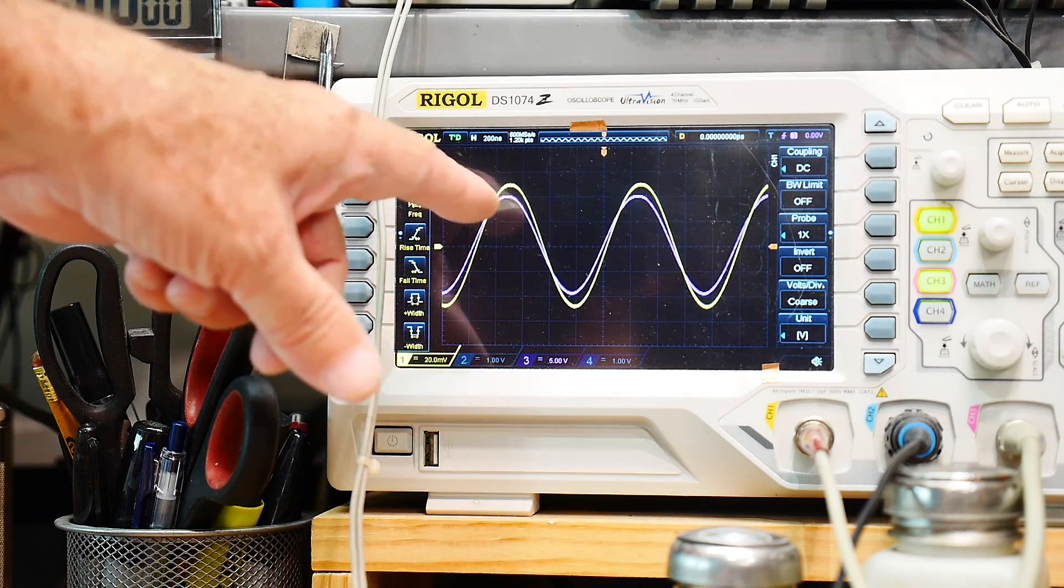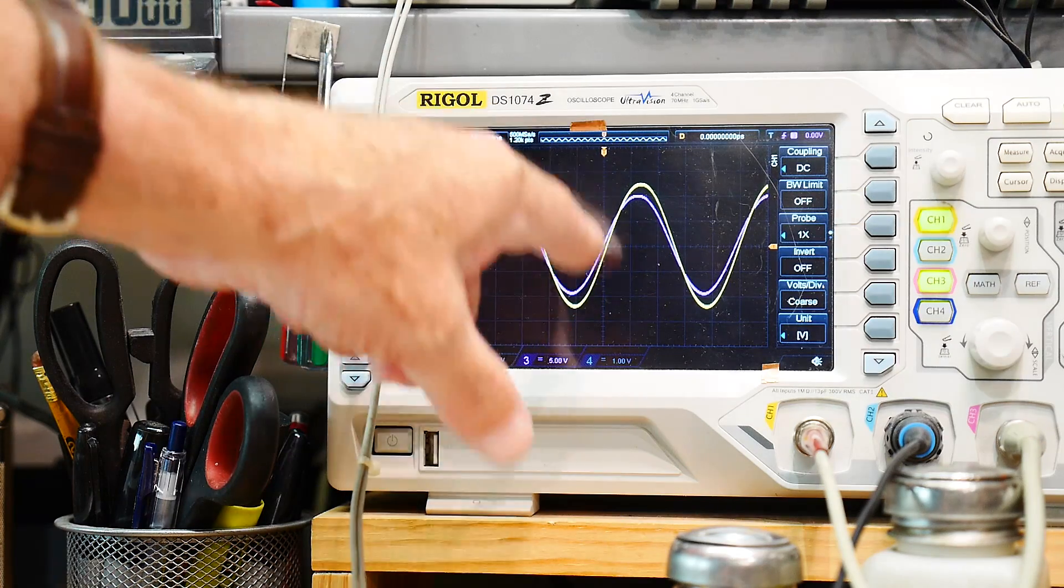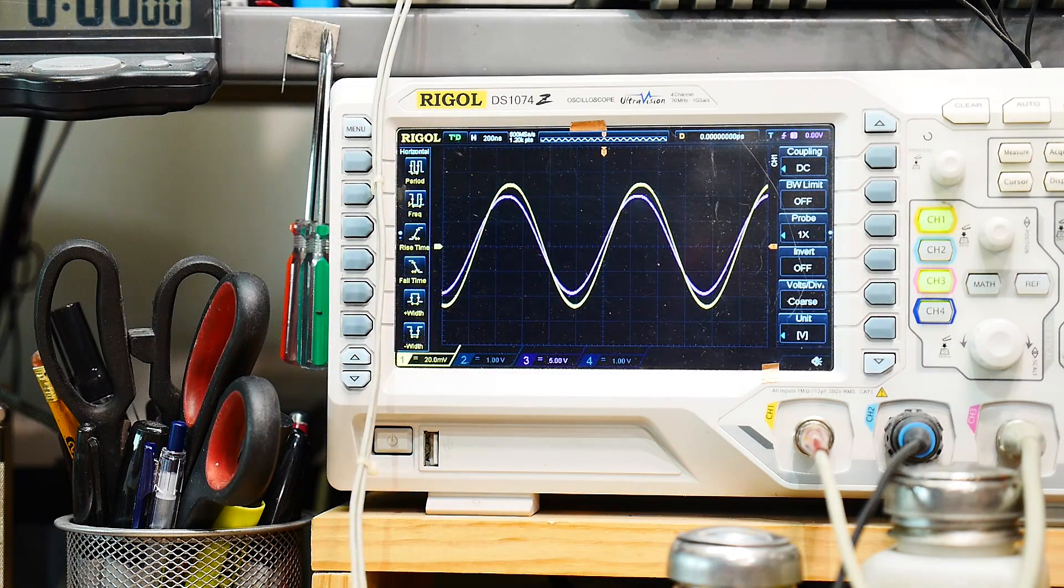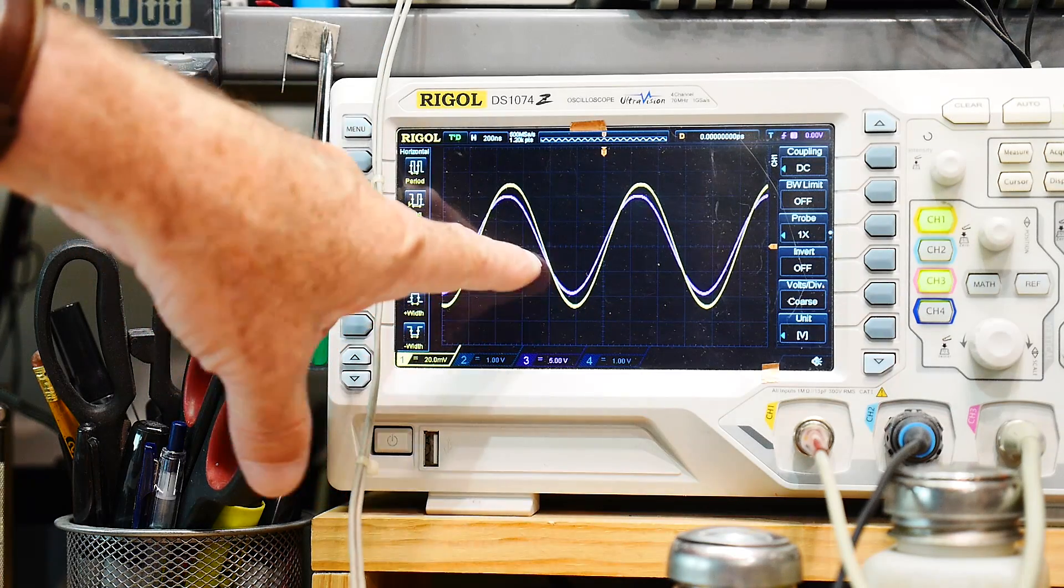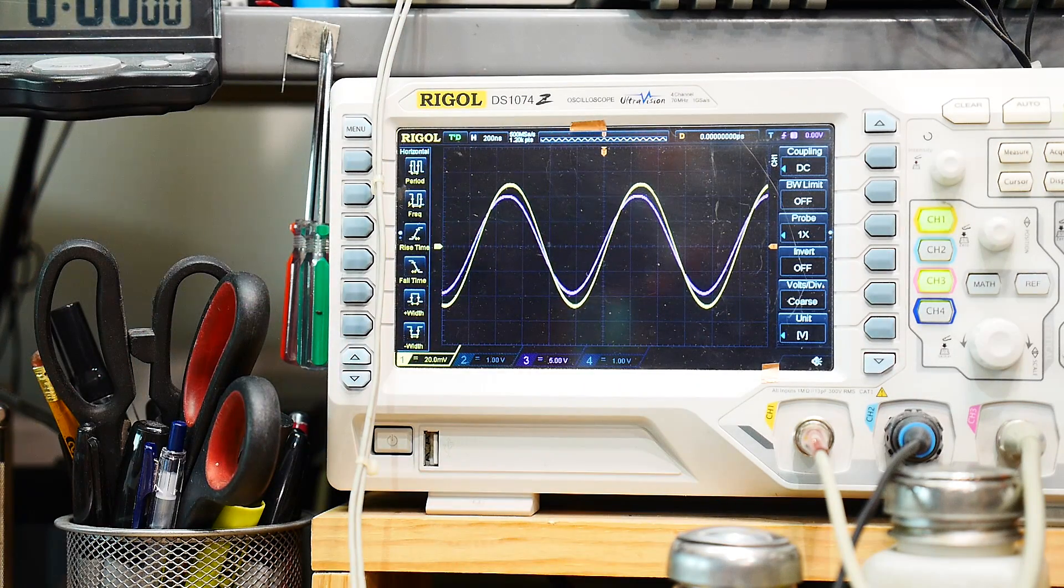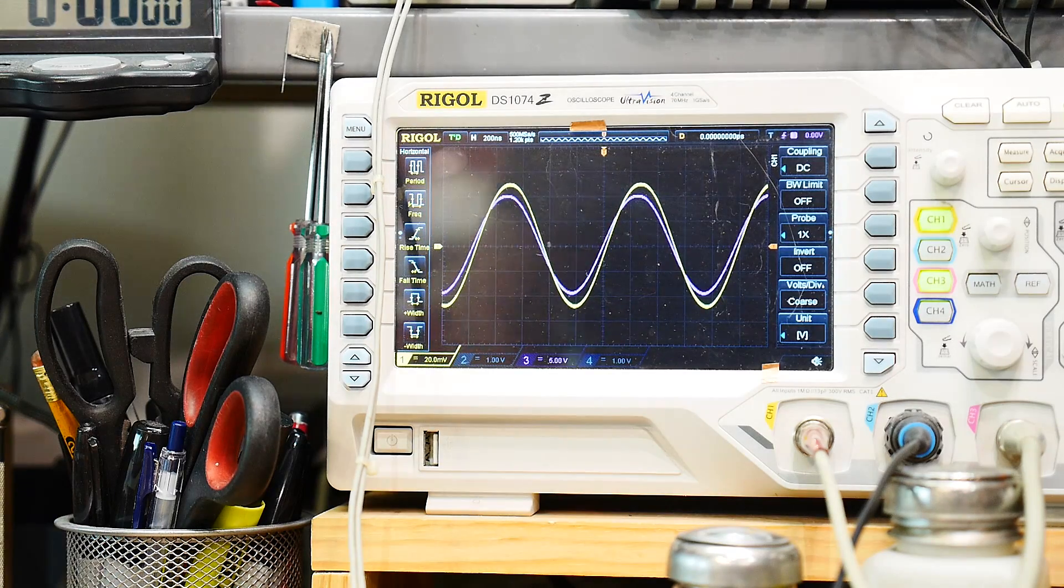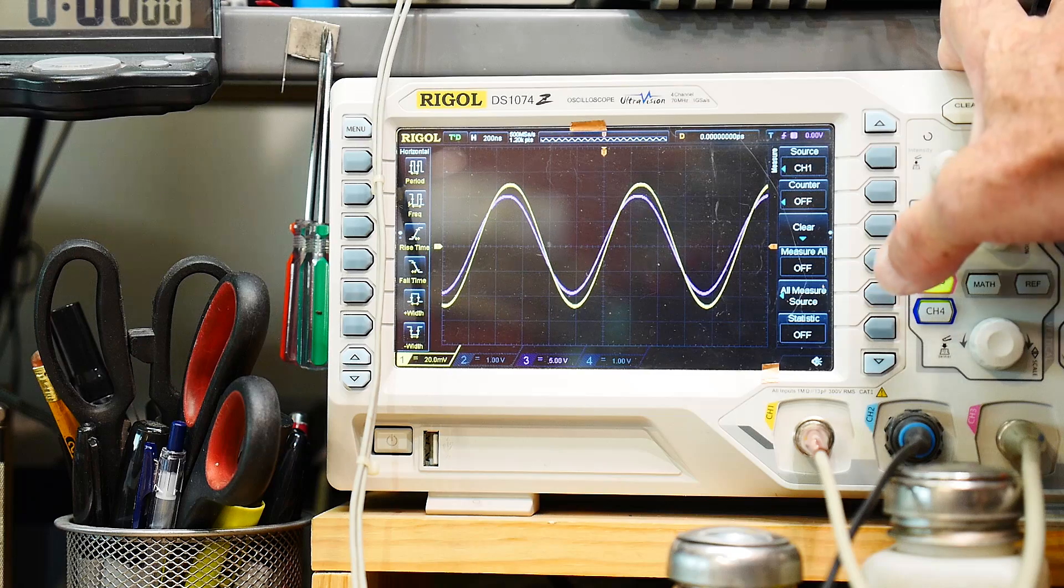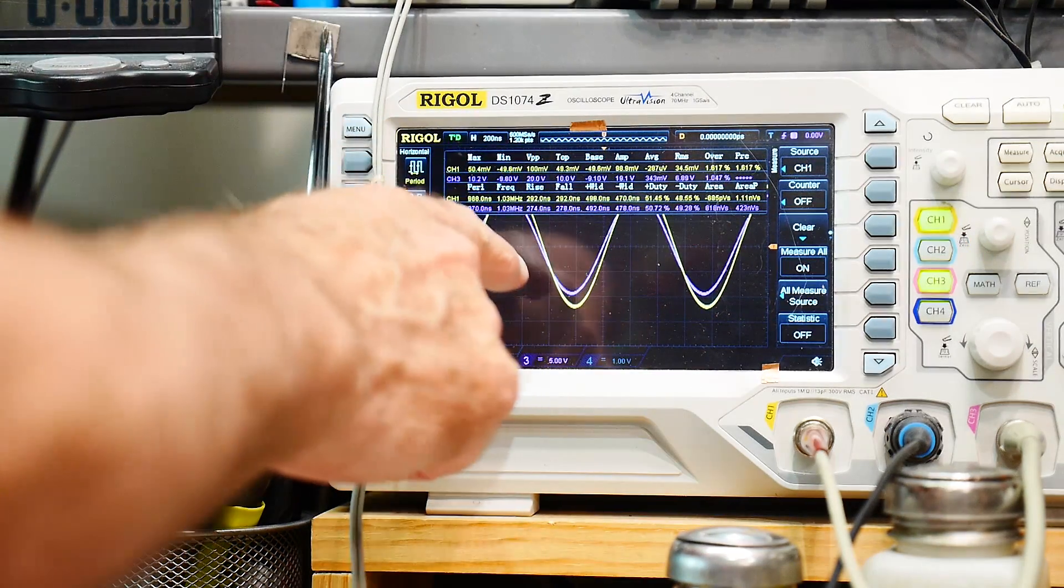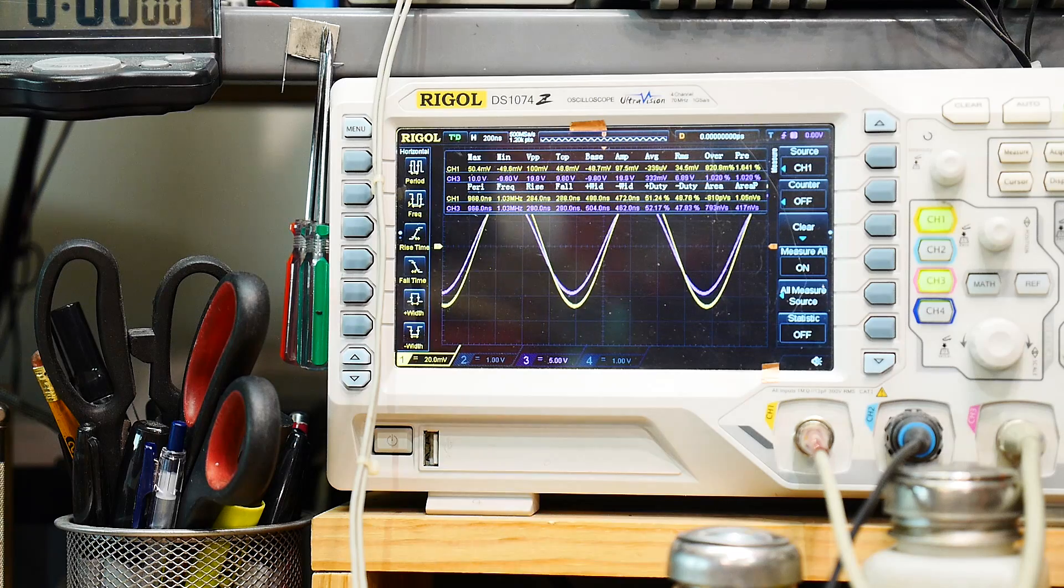So the purple trace is the signal and it's on 5 volts per division. So 5, 10, that's 10 volts, 10 volts, that's 20 volts peak to peak. And the probe is on 20 millivolts per division. So 20, 40, 50. So 50 and 50 is 100, so 100 millivolts. 100 millivolts is 100 milliamps. So it's working. We could turn on measurement. Let's see here, measure, measure everything. And we could look up here. That's going to be too probably too small for you to read, but basically the peak to peak is 20 volts and the peak to peak is 100 millivolts. So channel one, channel three, so that's working great.